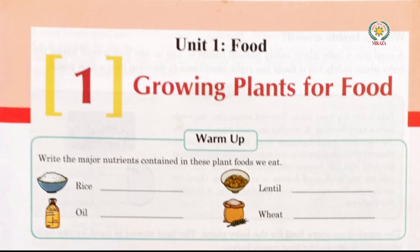So we have rice, then lentil — it's more like a bean. The chemical name is molybdin. It's like beans, as you have seen the soya bean and French bean, so it's very rich in protein.